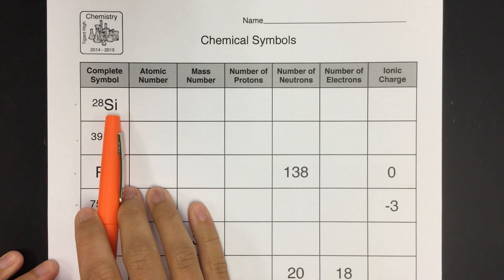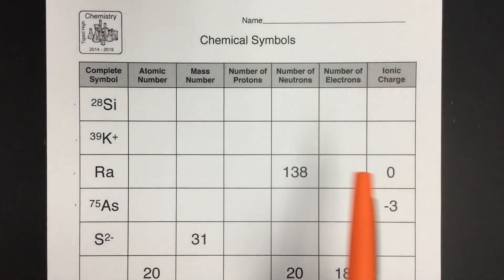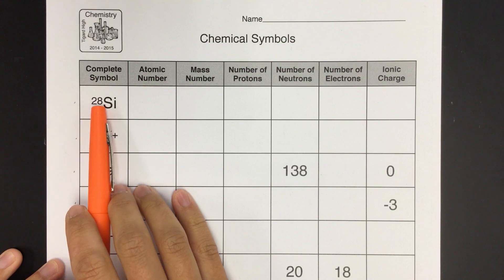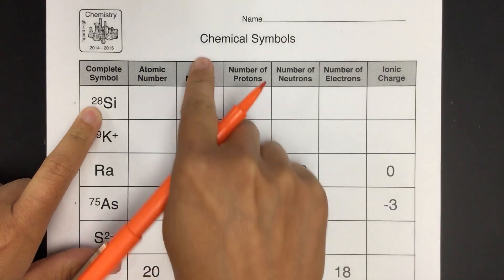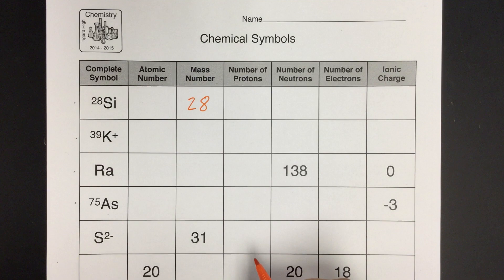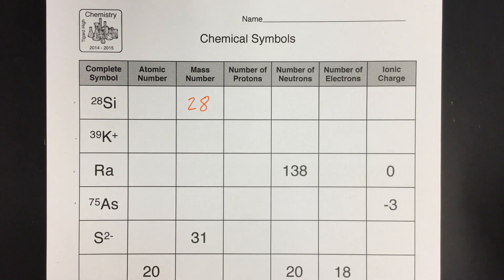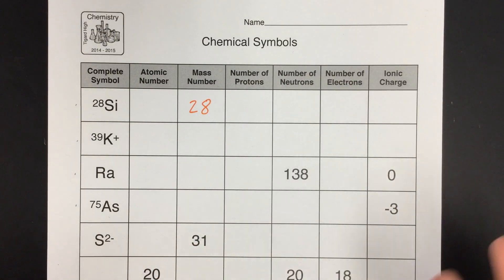This first one, we have Si, which is silicon, and it gives us the top left number, which we know is the mass number. So this 28 is the mass number. I can write that down so I remember that the mass number is 28. Since you're new to chemistry, you might feel like you don't know what else to do — I know that the mass number has the number of protons and neutrons, but I don't know either one of them.